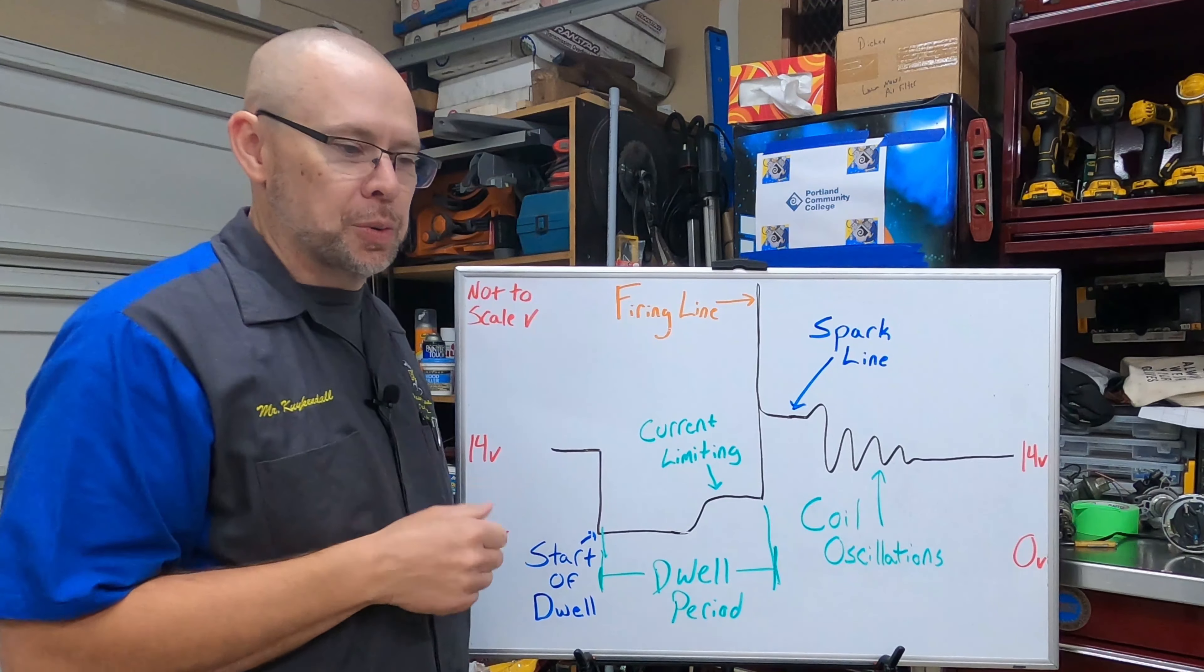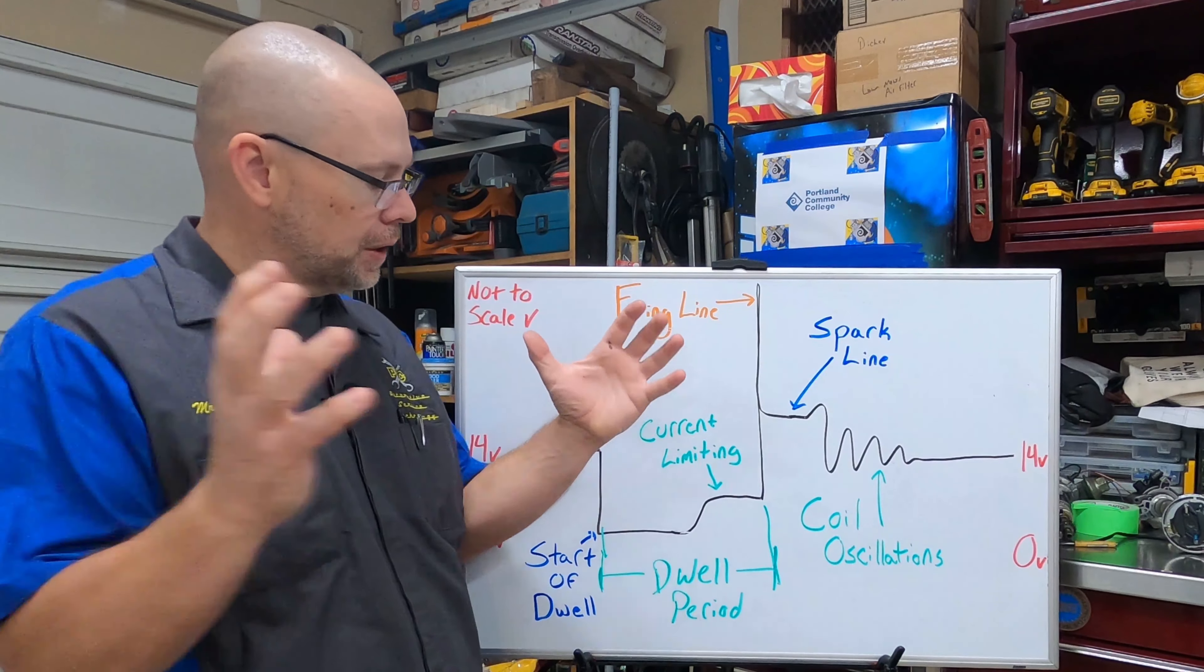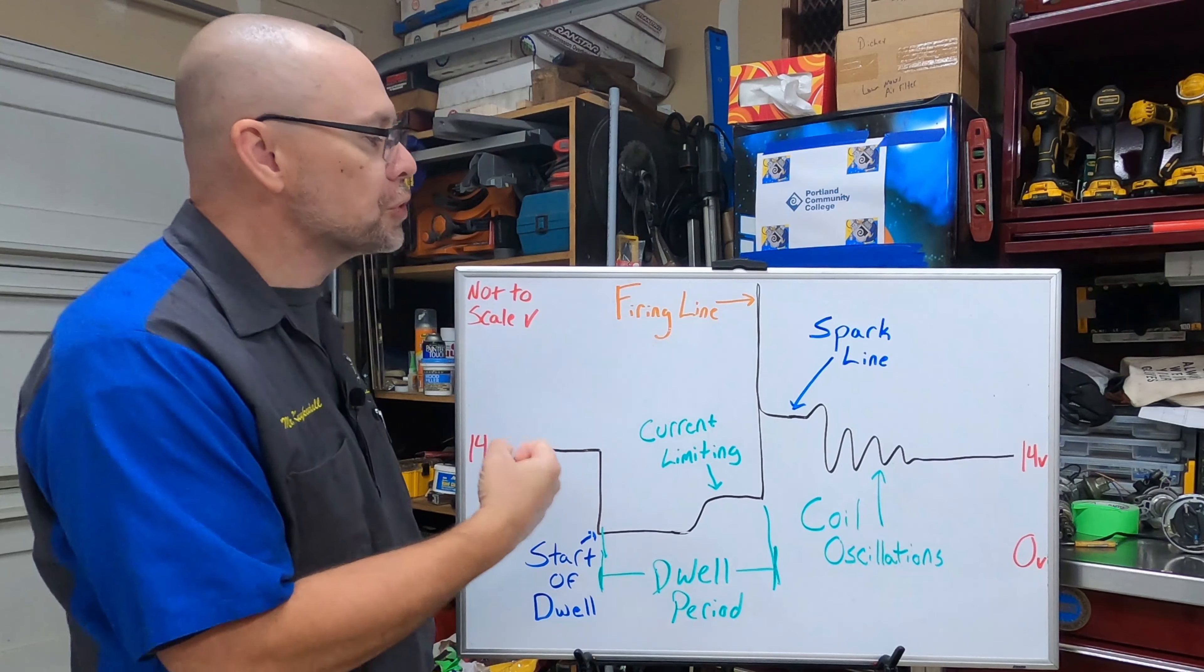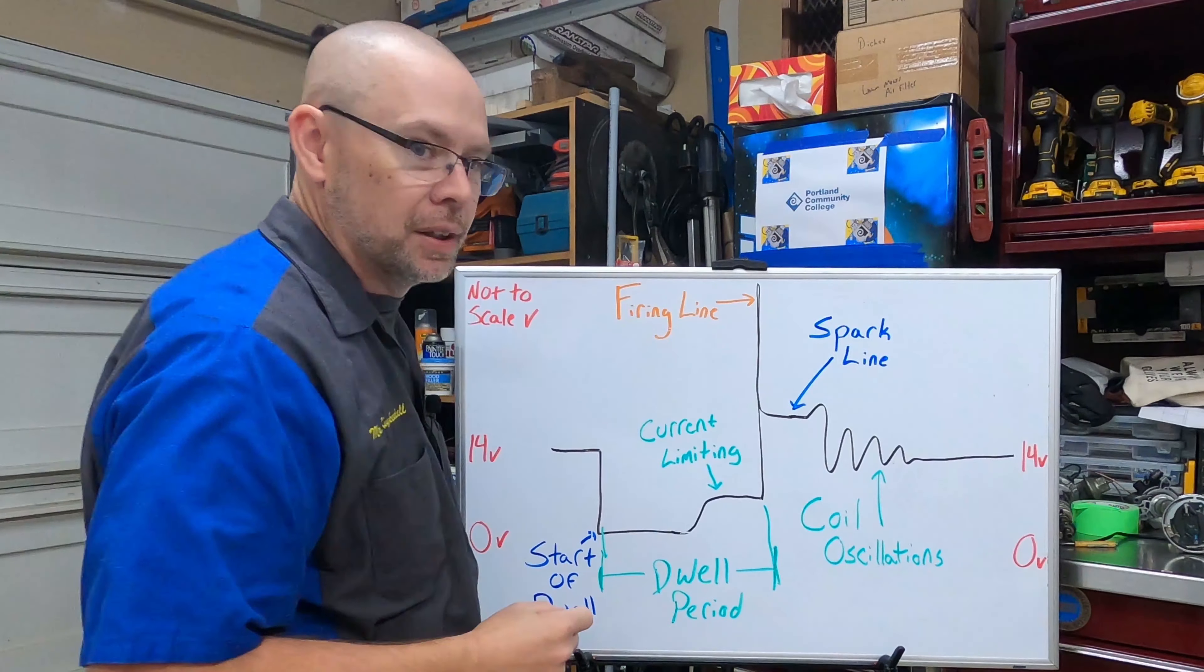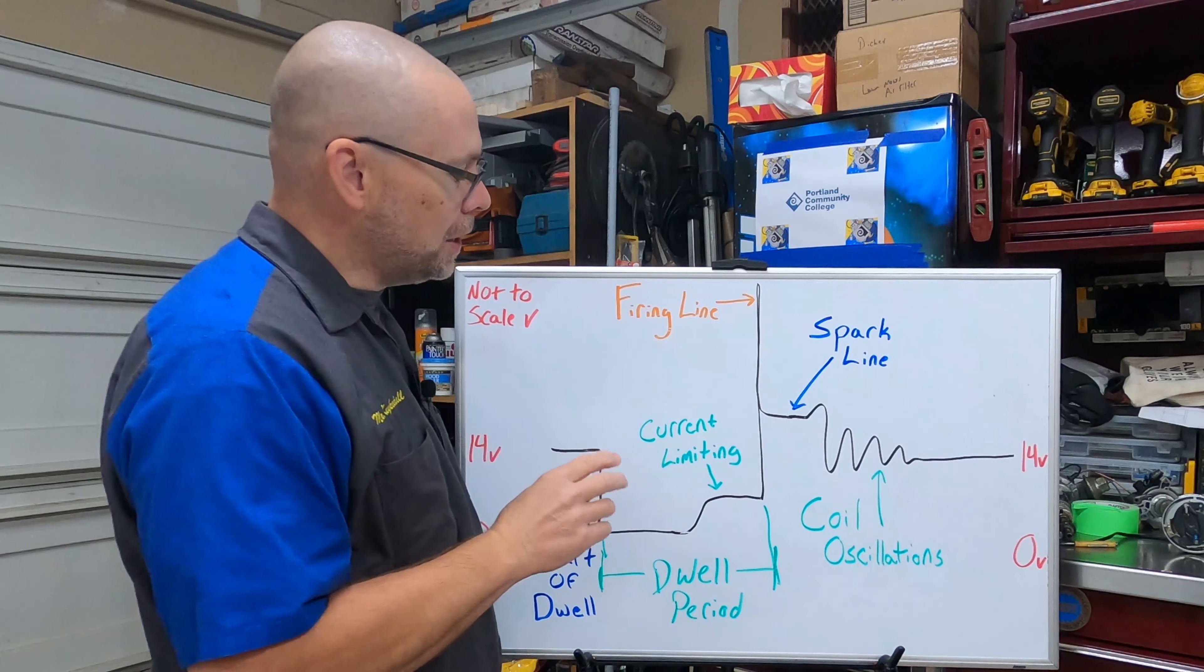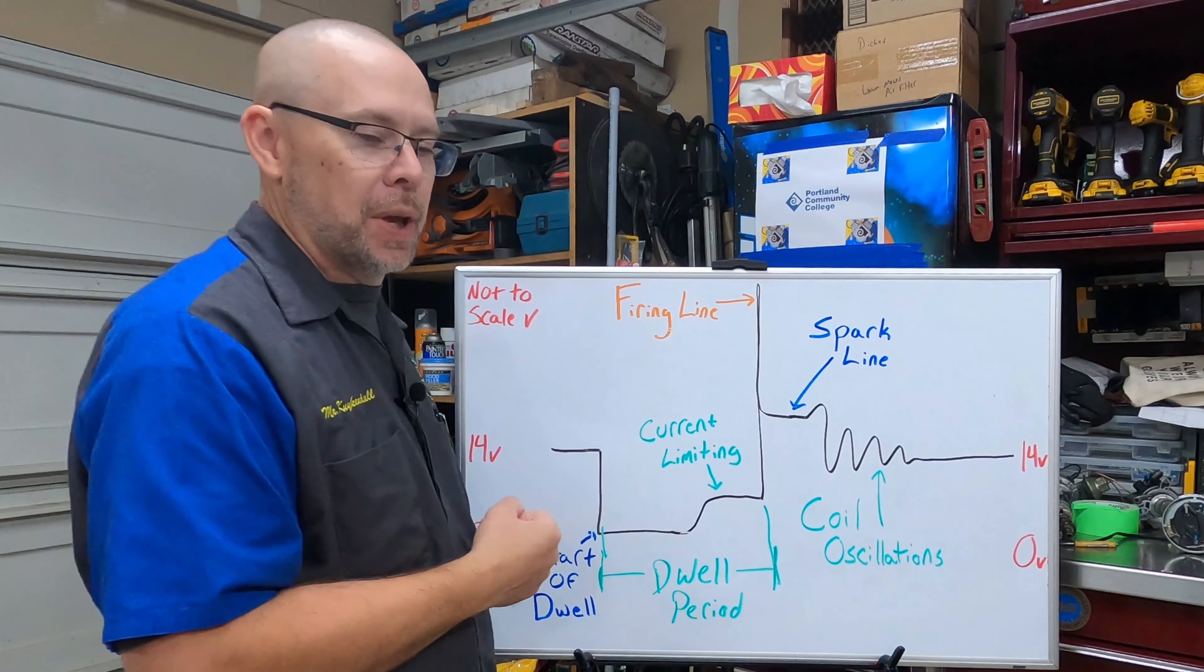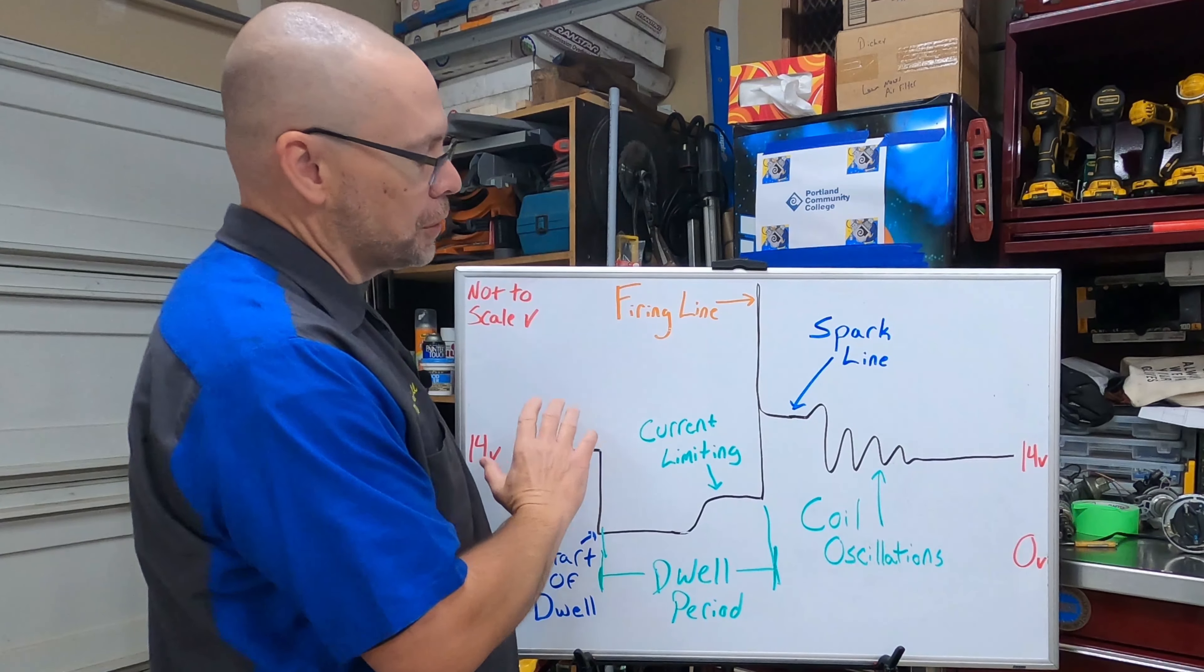At the end of dwell our switch turns off or goes open. As you should recall, when that switch opens up that nice big magnetic field that we made inside the coil collapses down, inducing voltage across the secondary but also back some in the primary.